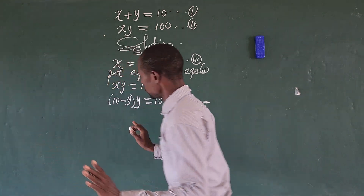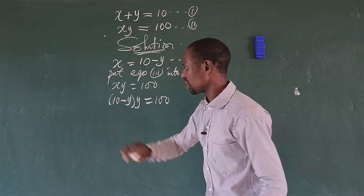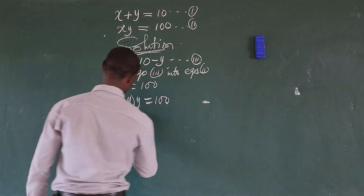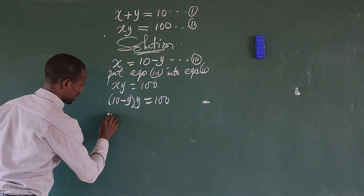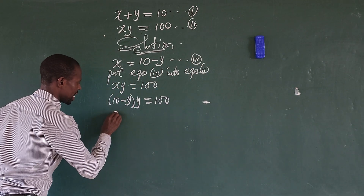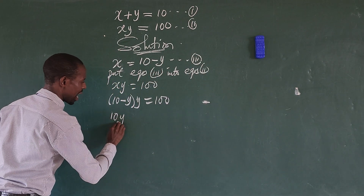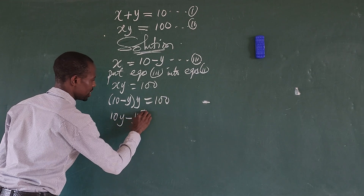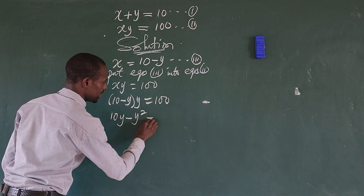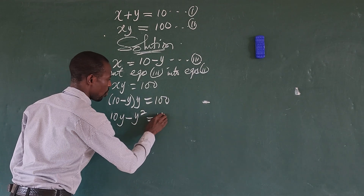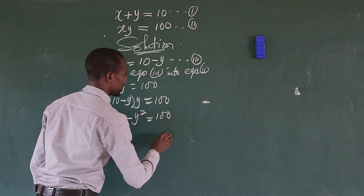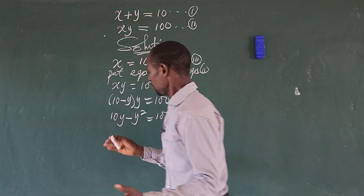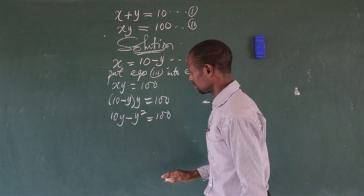We expand this expression. Opening up the brackets gives us 10y minus y squared equals 100.